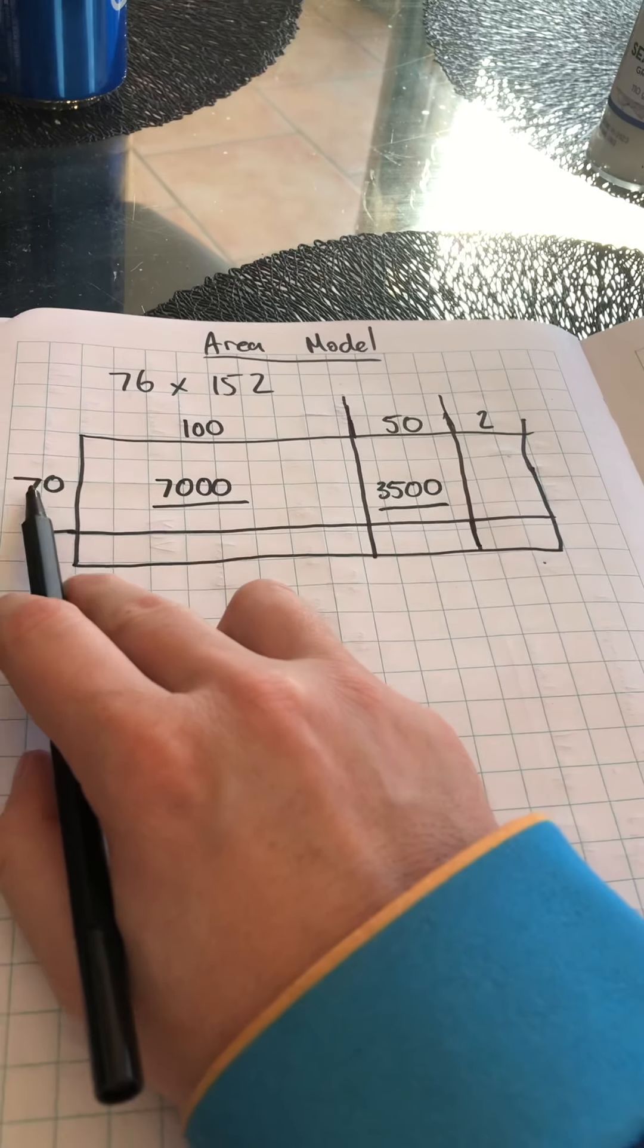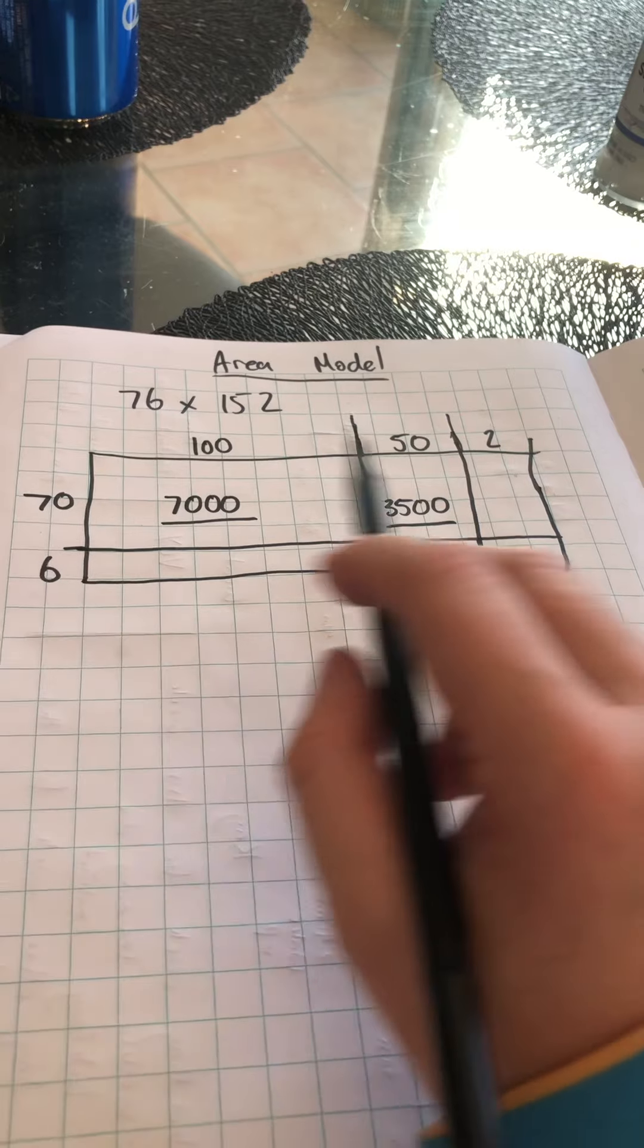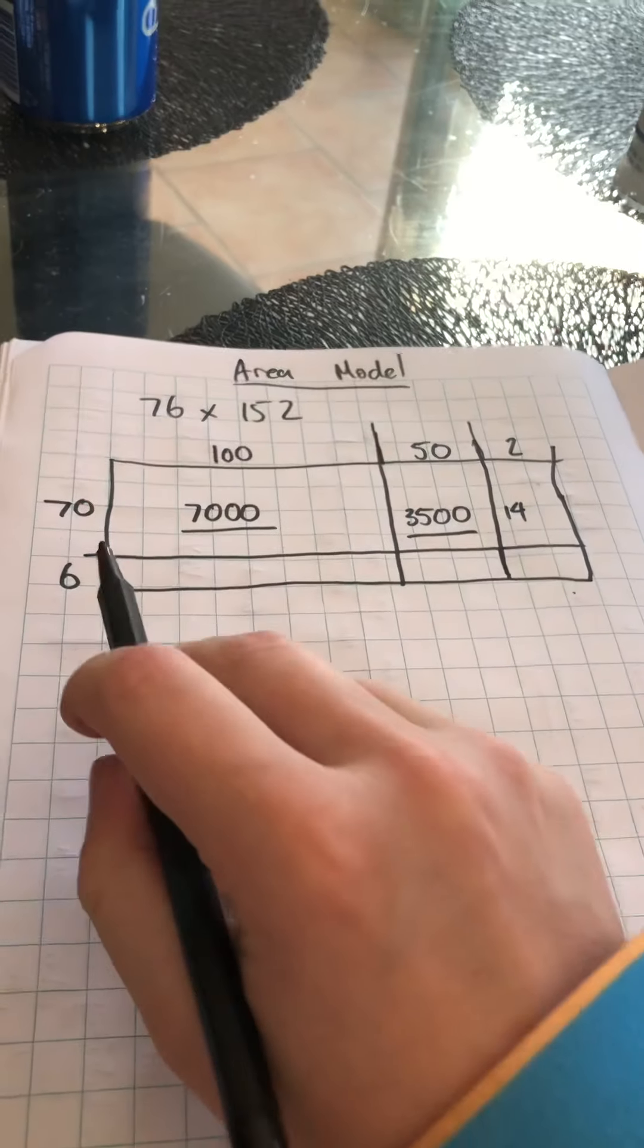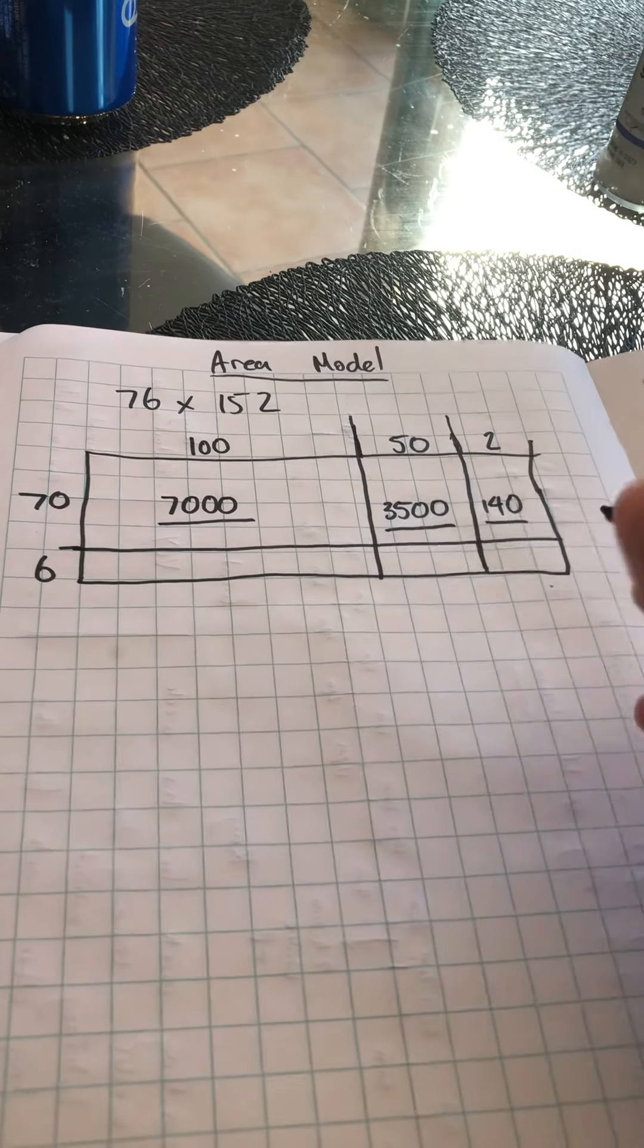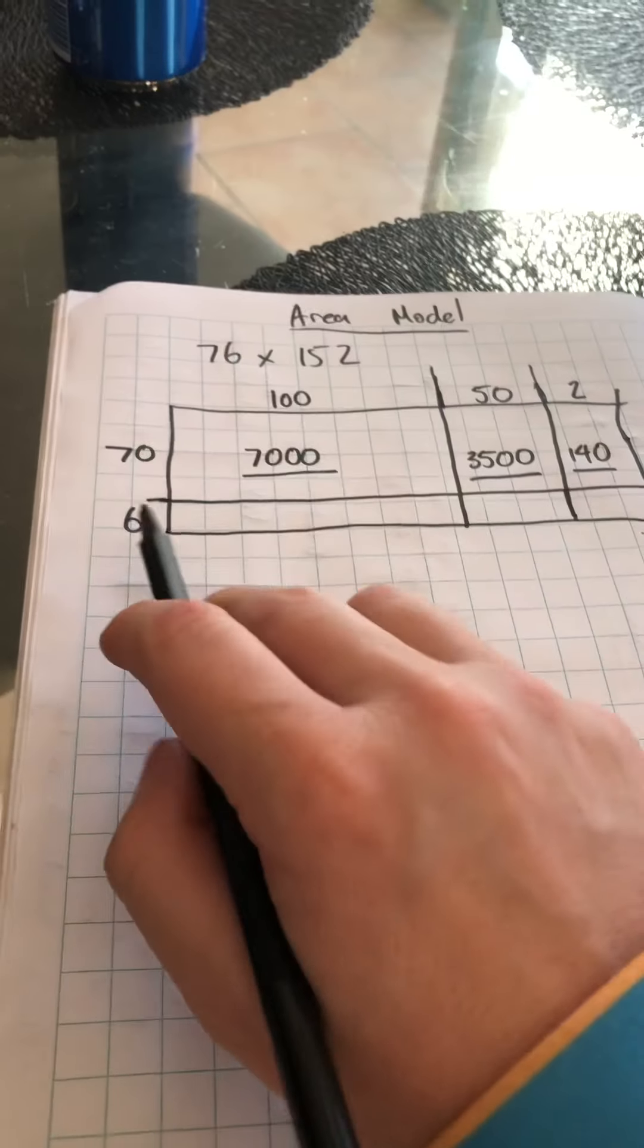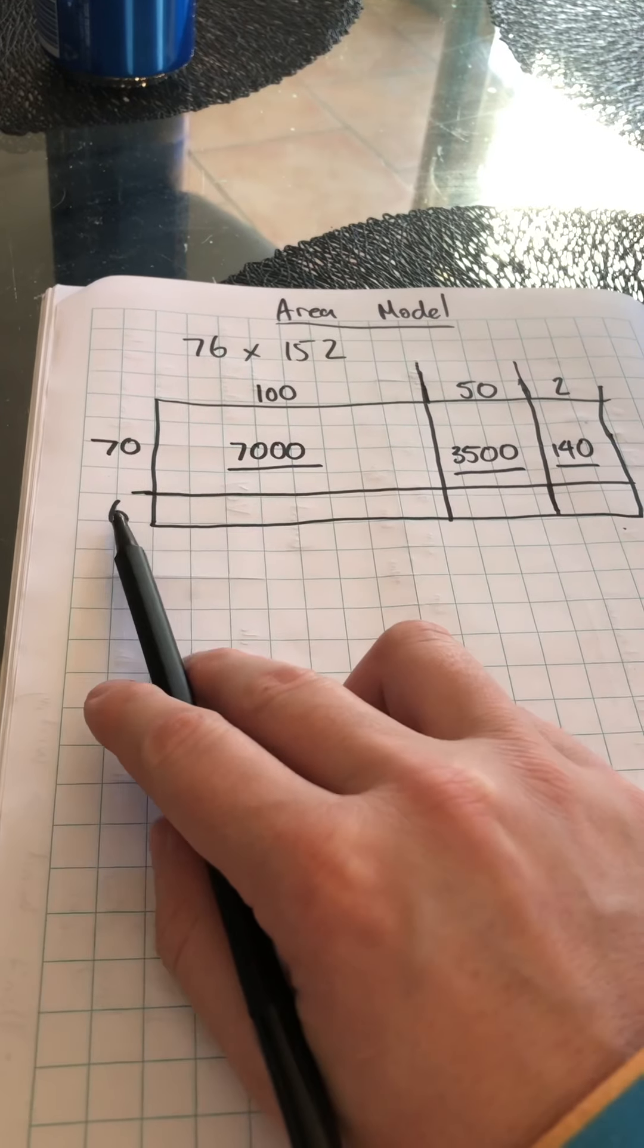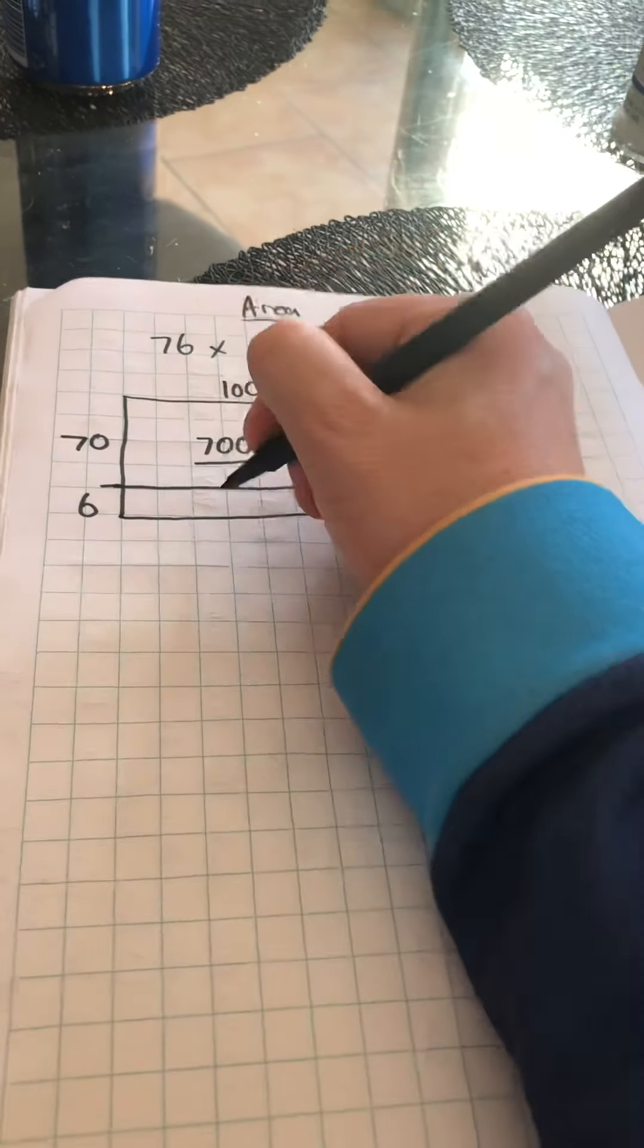My next part is going to be 70 multiplied by 2. I know that 7 times 2 is 14, and I've got one extra zero here, which means that I'm going to have 140 for the total in that box there. My next part is going along the bottom here. I'm going to multiply 6 now by 100. So 6 times 100 is 600.